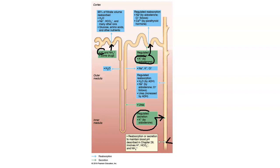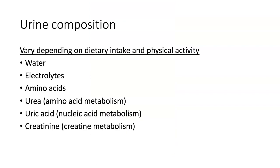After filtration, reabsorption, and secretion occur, what's exiting out of the collecting duct is urine. Urine is basically water with some electrolytes. It can contain amino acids depending on dietary intake. The other components of urine — like urea, uric acid, and creatinine — are waste products, which is exactly what urine is: a means to get rid of some waste products.